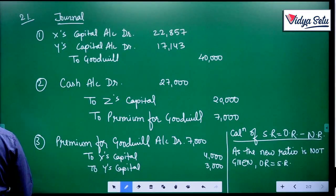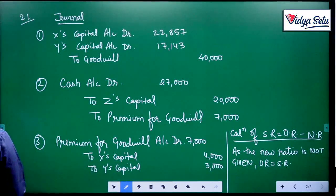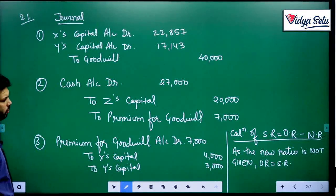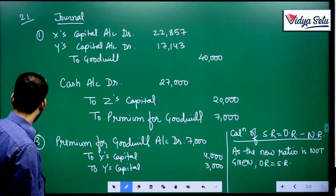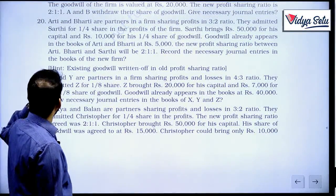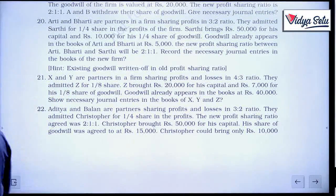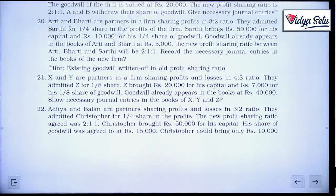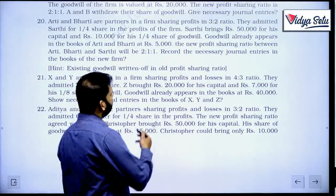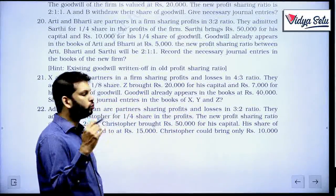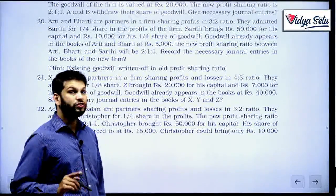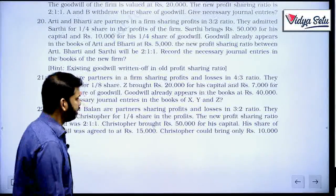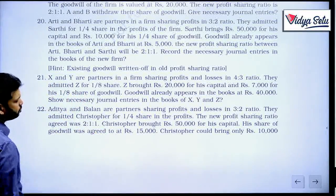That is it. As I told you, I believe there is some error in the question. The only adjustment could have been that the partners decided to continue to show the goodwill in the books, but that is not possible. Why? Because AS 10 forbids it. AS 10, accounting standard 10. The question is okay as per the solution.